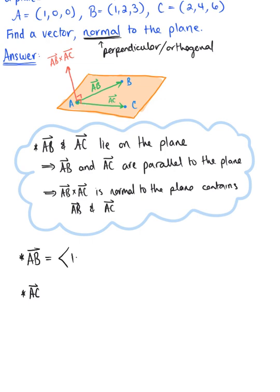I have 1 minus 1, we have 2 minus 0 and 3 minus 0, leaving us with the vector 0, 2, 3.